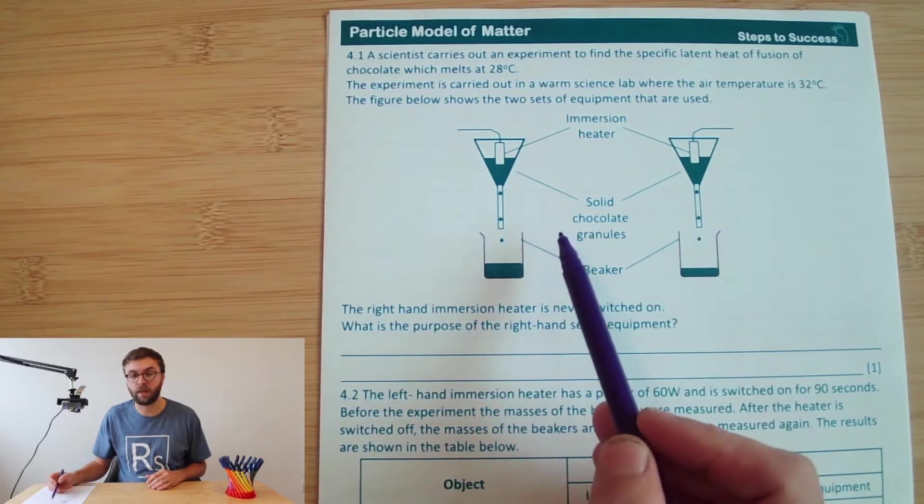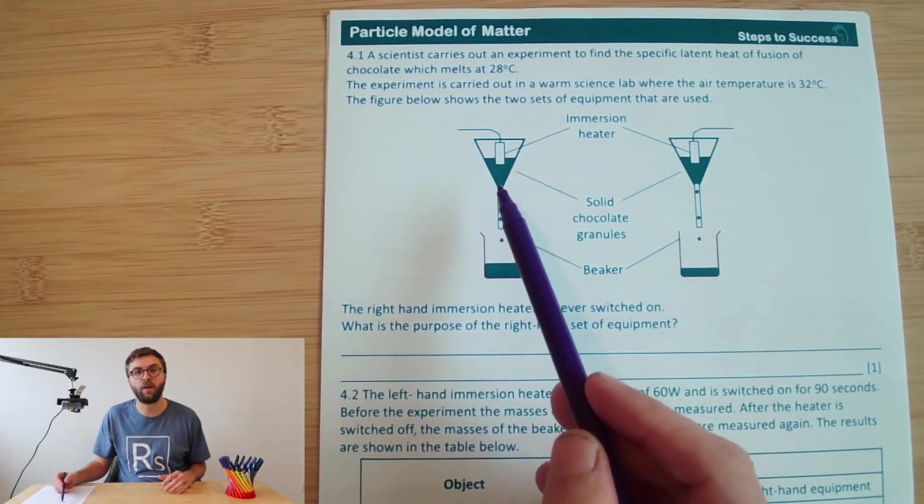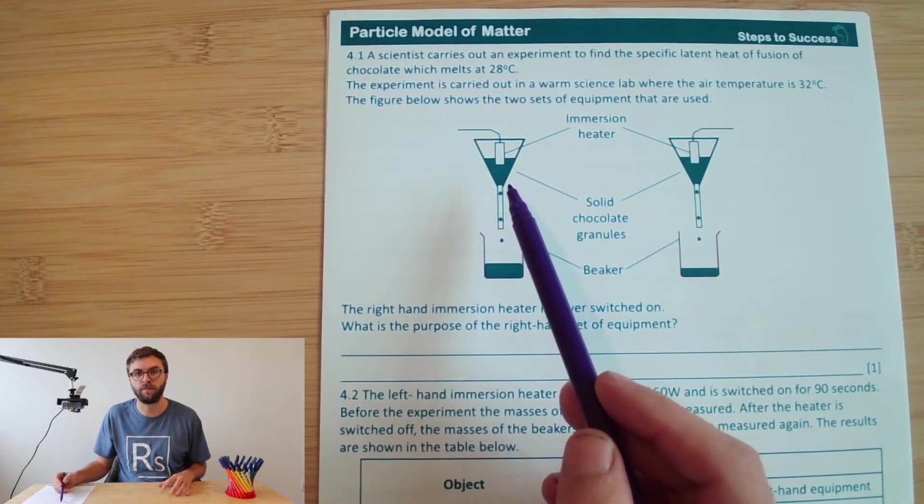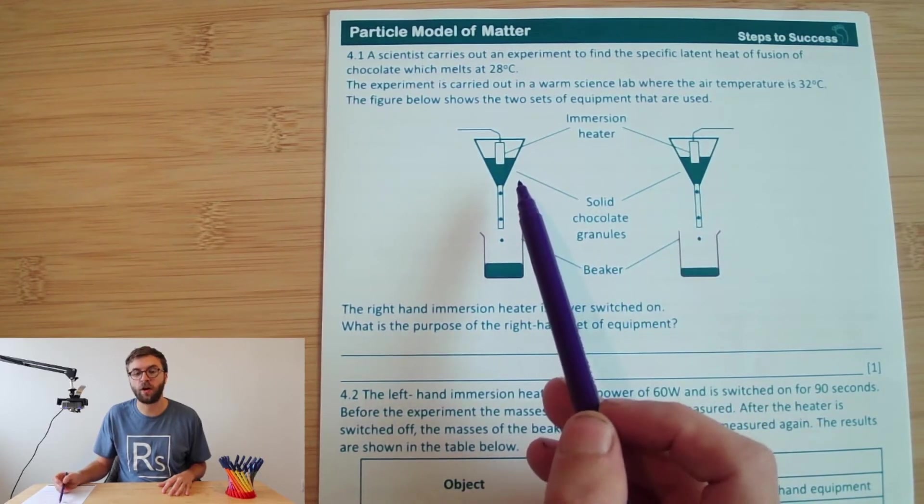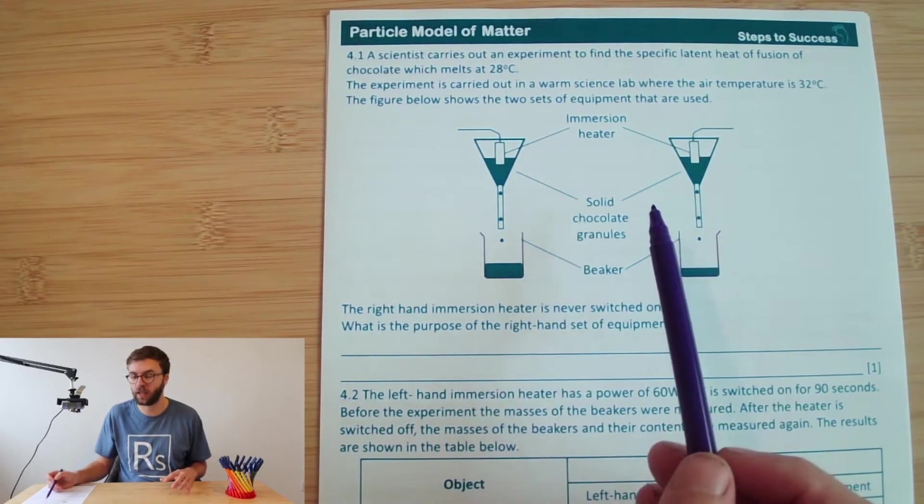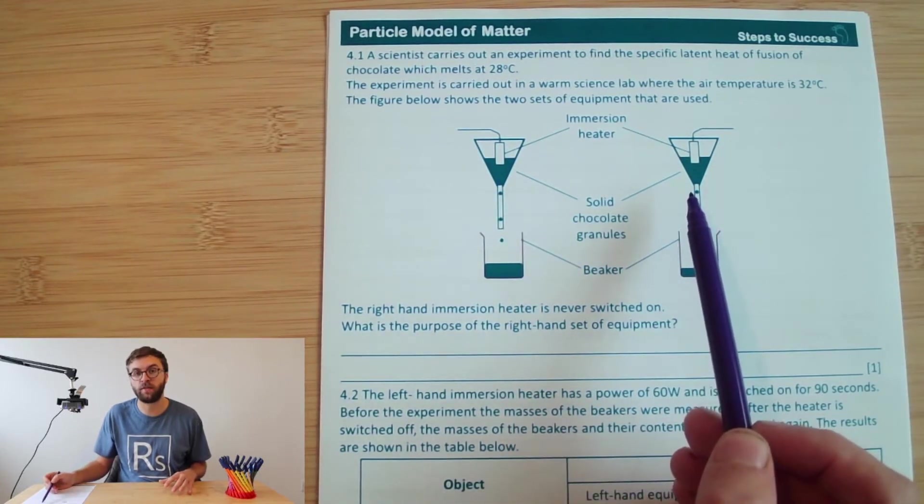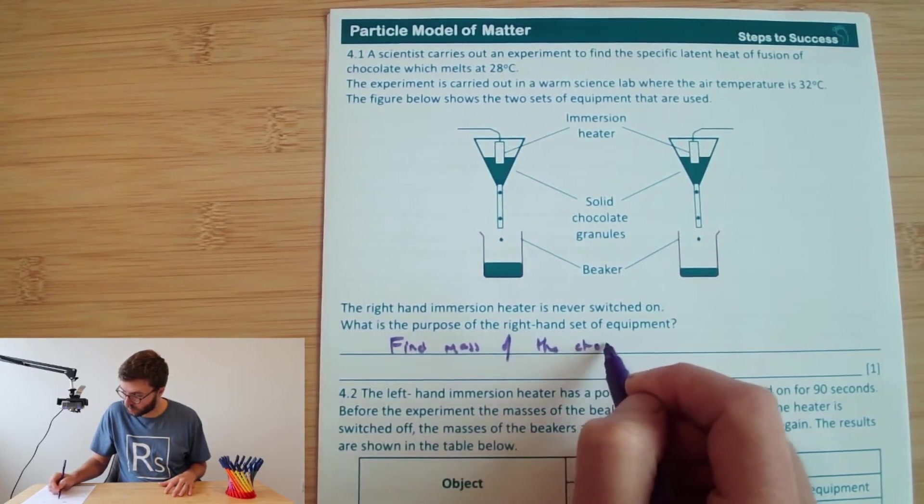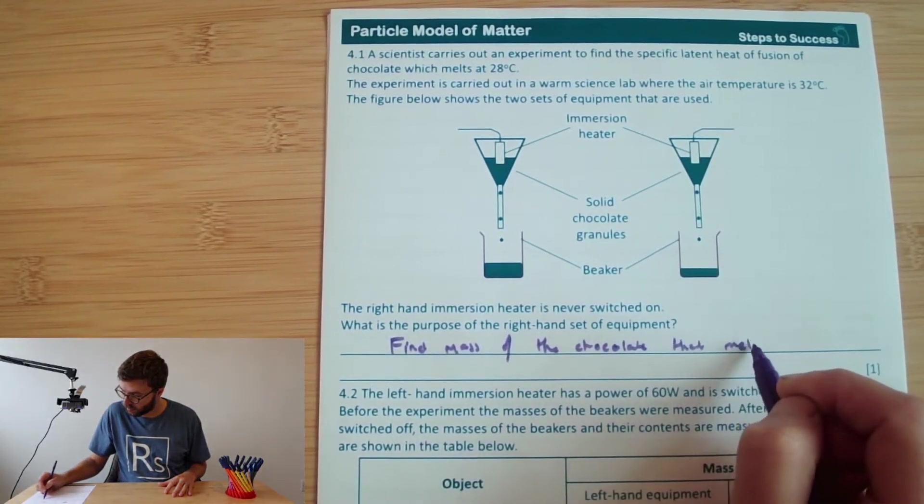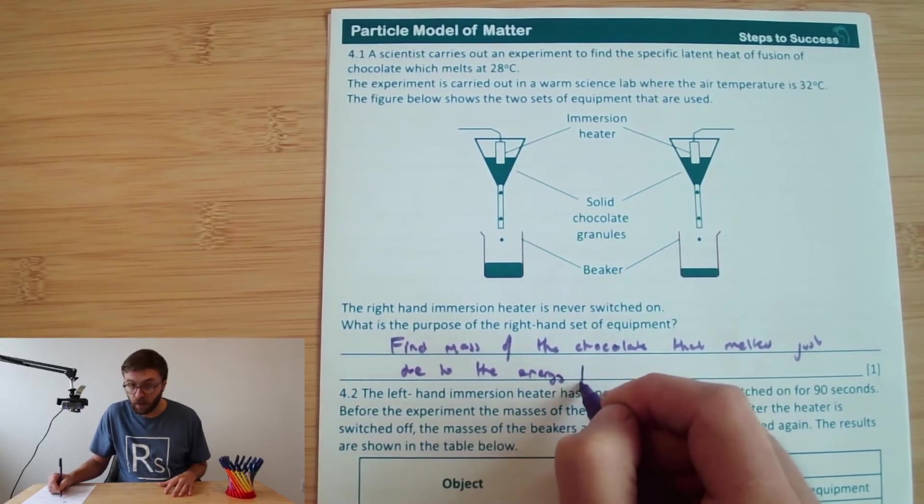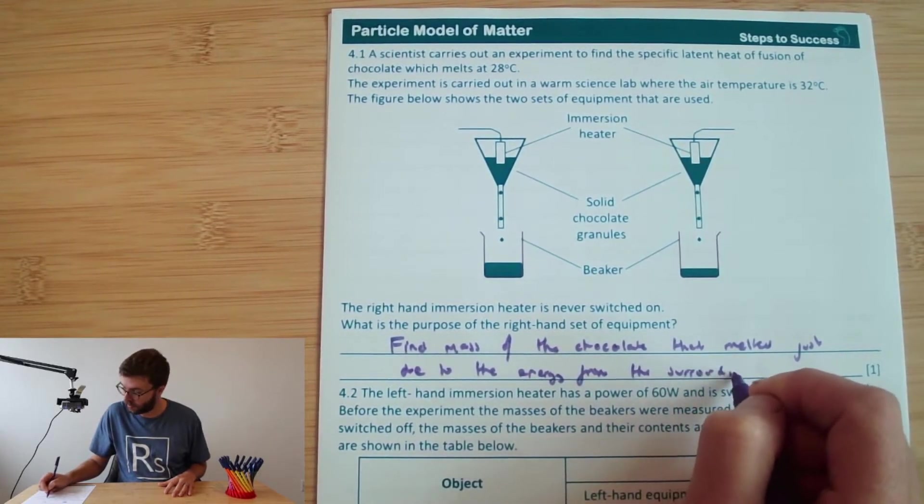Well, as you can see, the chocolate is melting in both. Now the chocolate will melt for two reasons. Number one, there'll be the thermal energy that's transferred from the immersion heater. But secondly, there'll also be the thermal energy that comes from the surrounding air temperature, which will also melt the chocolate. So by setting up the two pieces of equipment, one with the immersion heater on, and one with the immersion heater off, we're using what's called a controlled experiment or a control. And this will allow us to see how much of the melting is due to the immersion heater, and how much is due to just the effects of the temperature of the air and the surrounding environment. So the reason that the right hand one is to allow us to determine that. So therefore we can find the mass of the chocolate that melted just due to the energy from the surrounding air.